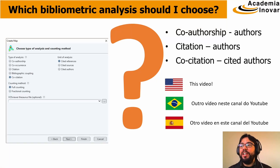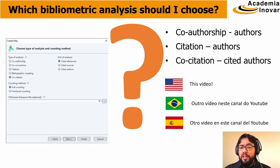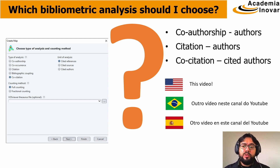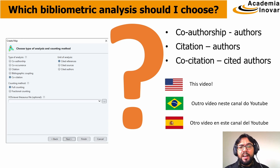Hi folks! In this video we're going to discuss some bibliometric analyses available in VOSviewer. This version of the video is in English. We already have a Brazilian Portuguese version of the same video on the channel that took almost 30 minutes. In this English version, we're going to split the video into four new videos — the first one discussing the main concepts and a general overview, and the following videos will detail each one of the analyses.